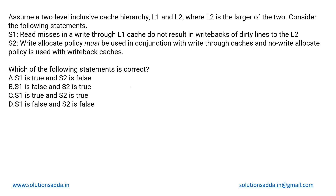This is a COA question from caching. They are describing a two-level inclusive cache hierarchy — L1 and L2 — where L2 is the larger of the two. L2 lies above L1 in the hierarchy. We have to consider two statements and determine which of them is true.